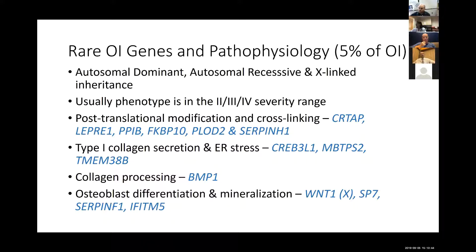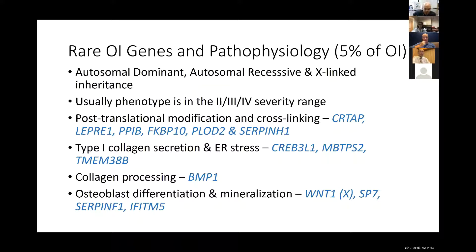Recessive forms of OI account for about 5% of OI phenotypes, and these are typically in the more severe Sillence classification range — type 2, 3, and 4 OI. We can break these down into four broad categories: genes responsible for post-translational modification and cross-linking of type 1 collagen molecules; genes important for secretion of type 1 collagen also involved in endoplasmic reticulum stress; one gene, BMP1, related to collagen processing; and a series of genes including one X-linked gene involved in osteoblast differentiation and bone mineralization.